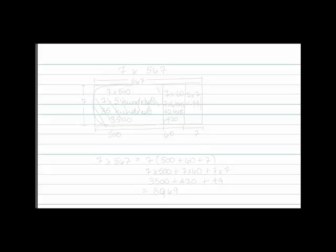All right, let's look at an area model for our problem 7 times 567. So, we're going to represent this multiplication with a rectangle.